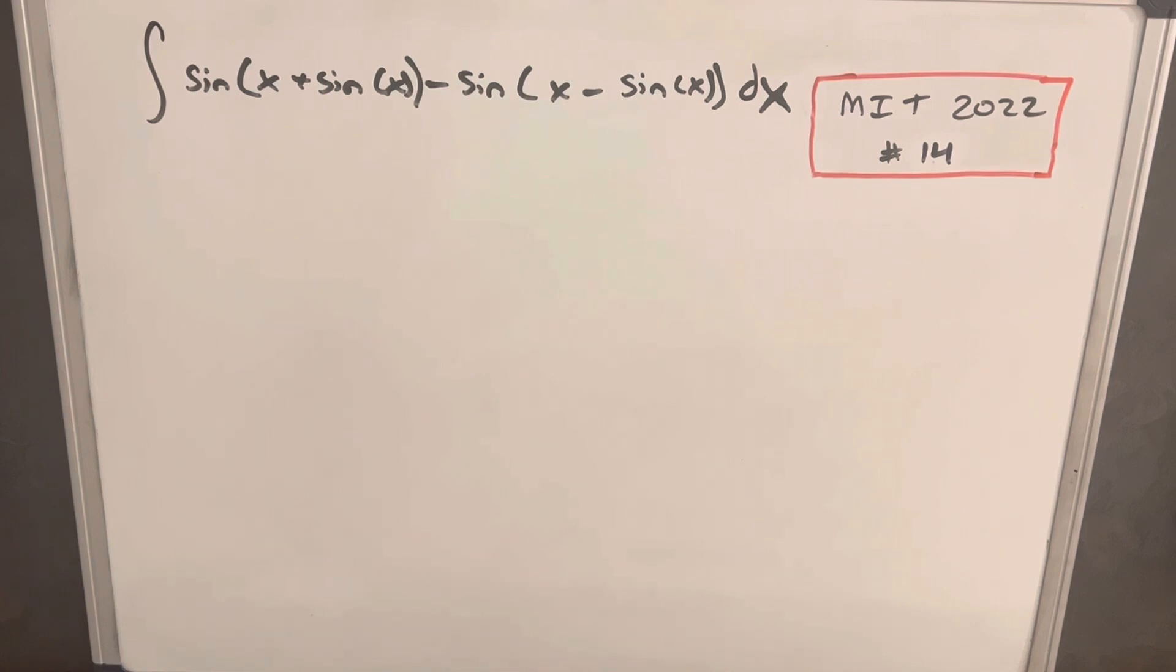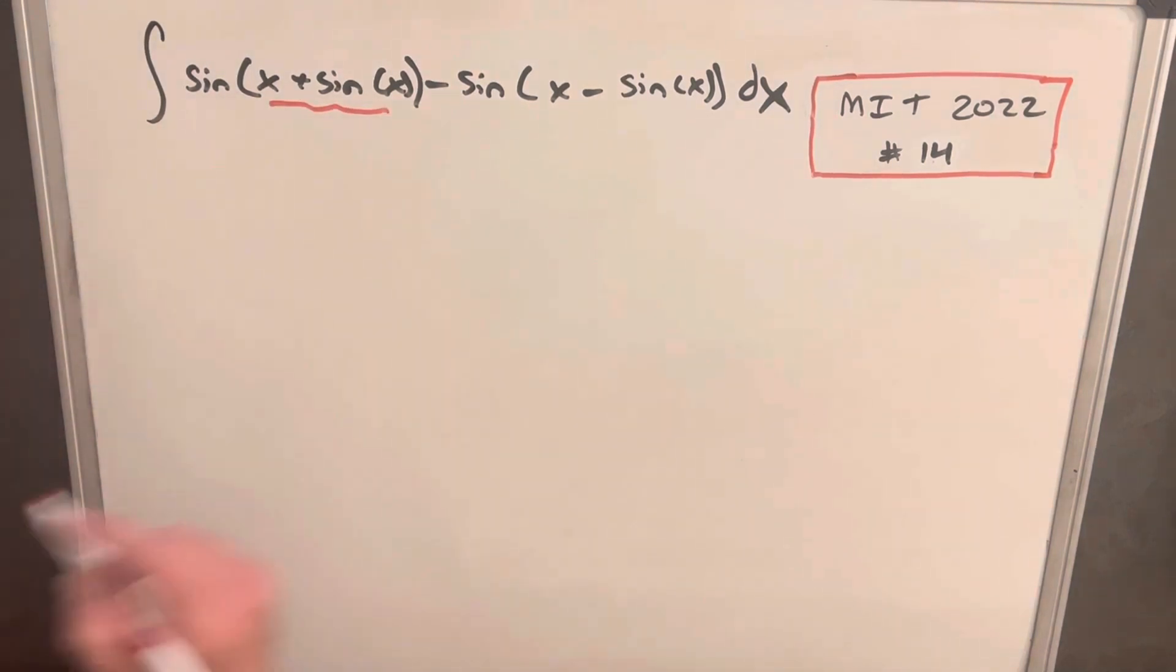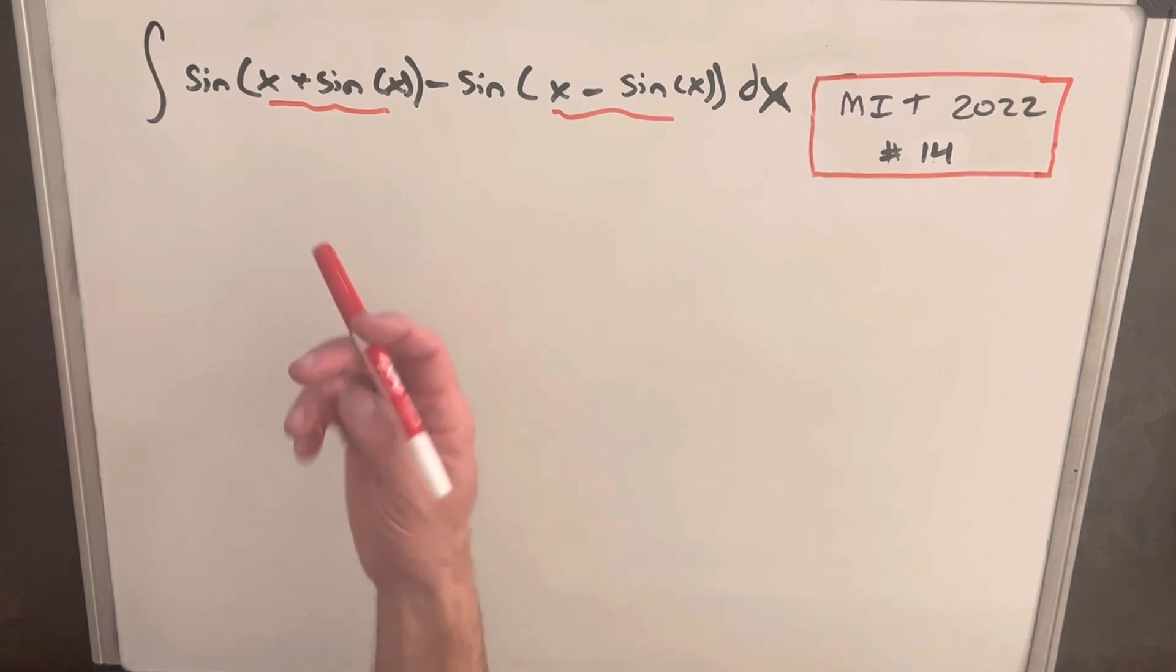Now let's get started. The first thing I notice is whenever you have anything complicated inside of a sine or cosine function, the first thing you usually would like is to do a u-substitution. But there's nothing outside of these sine functions that's going to help us, so what I want to do is use a couple of trig identities.